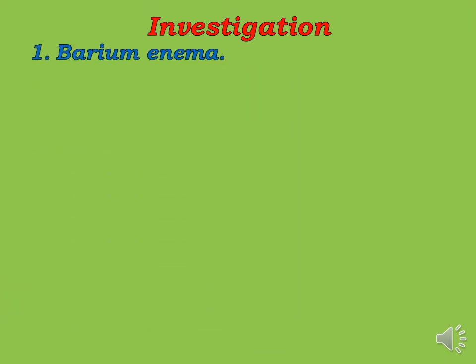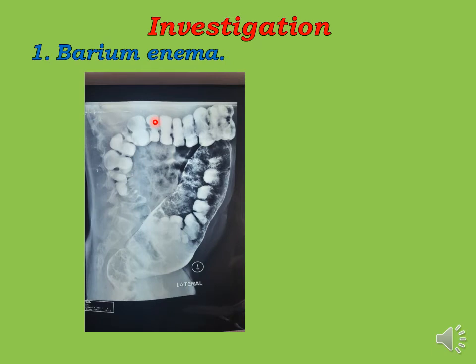Investigation starts with radiological tests — a barium enema, which is a lower GIT contrast study using barium. A catheter is introduced into the rectum and barium is instilled. Lateral and AP view films are taken to outline the rectum. We will see the narrow segment distally in the rectum, then a transitional zone, then a dilated segment proximally.